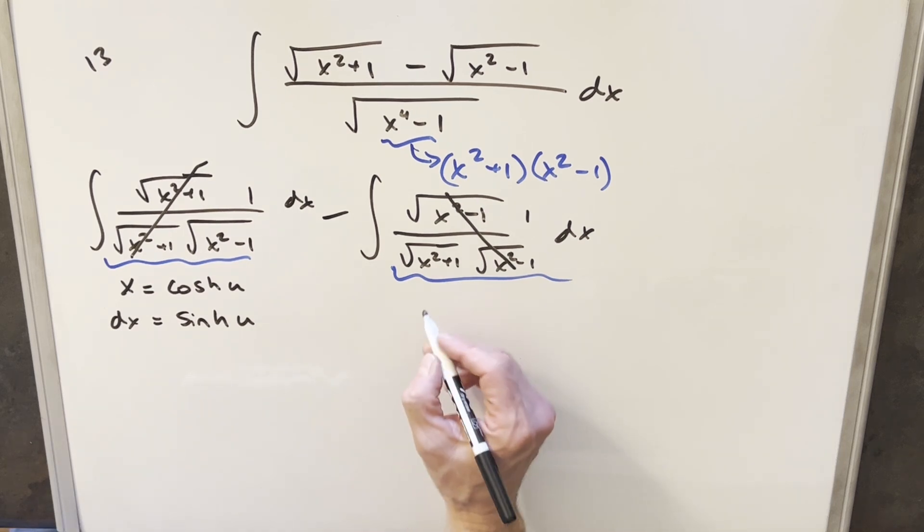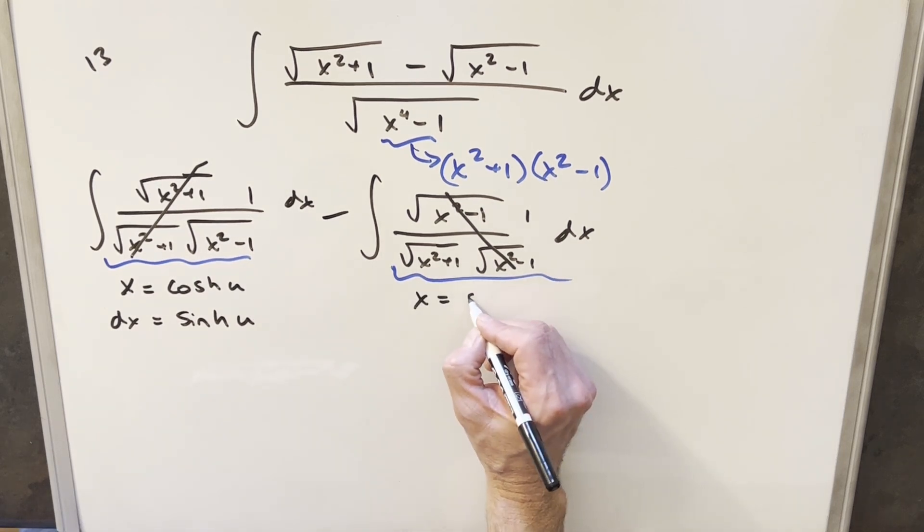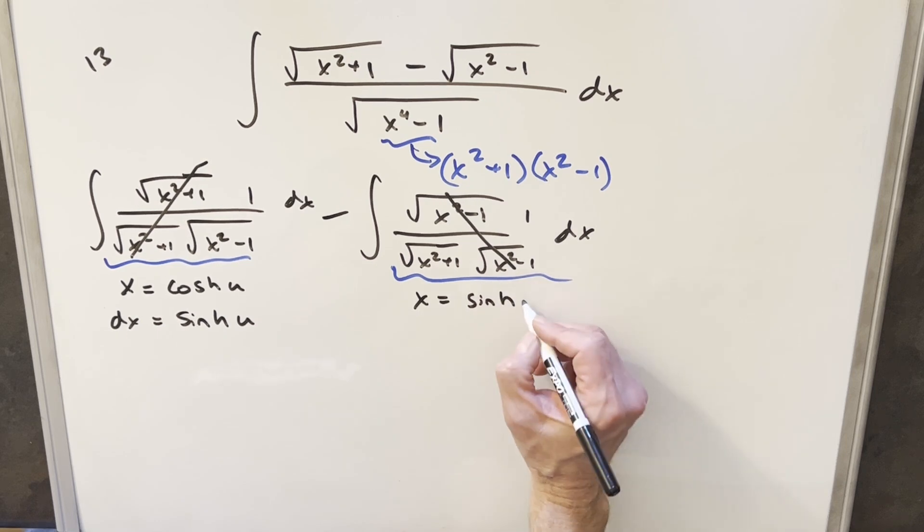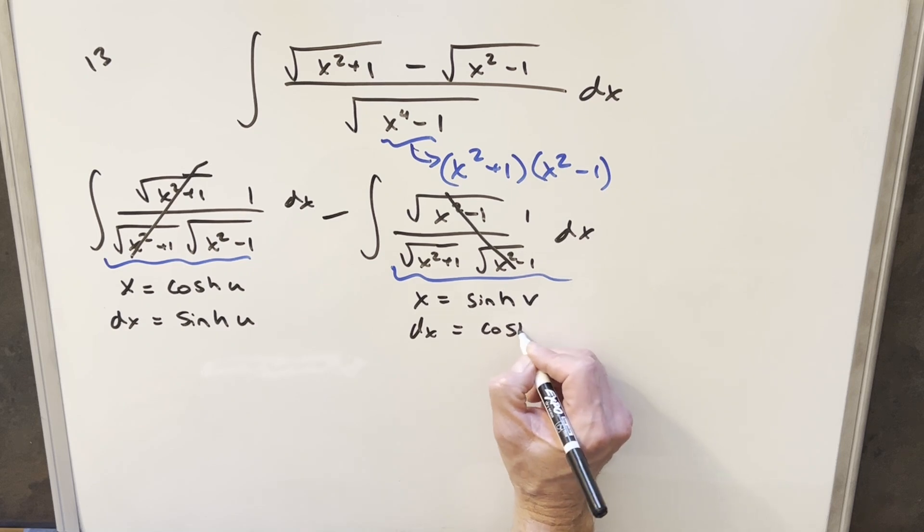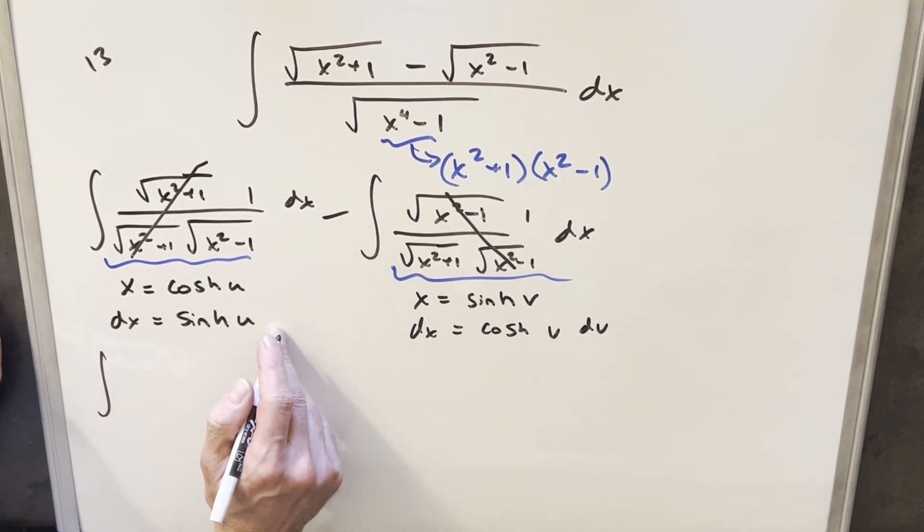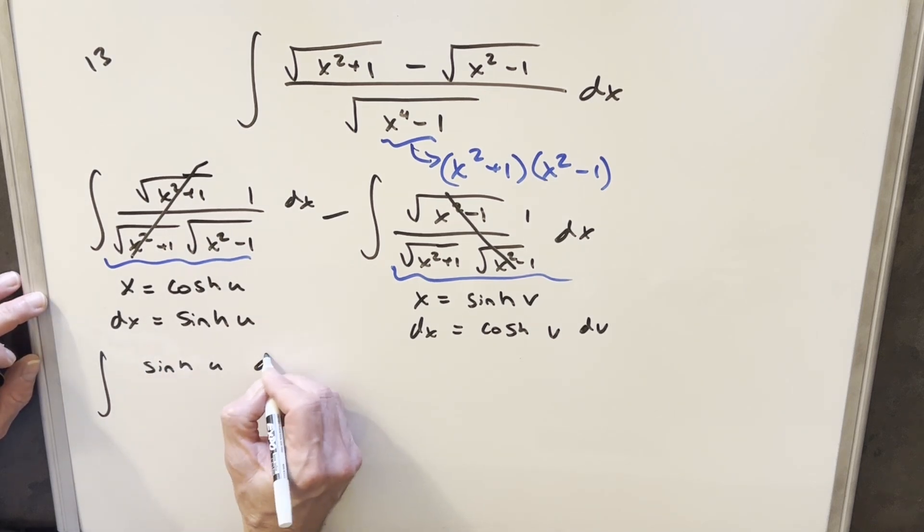And then something really similar over here, for x, I'm going to substitute, we'll use a different variable, we'll say sinh of v, and then our dx is going to be cosh v dv. So then we'll make this substitution, so our dx over here, this is going to give me sinh of u du, sorry, I forgot the du over here.